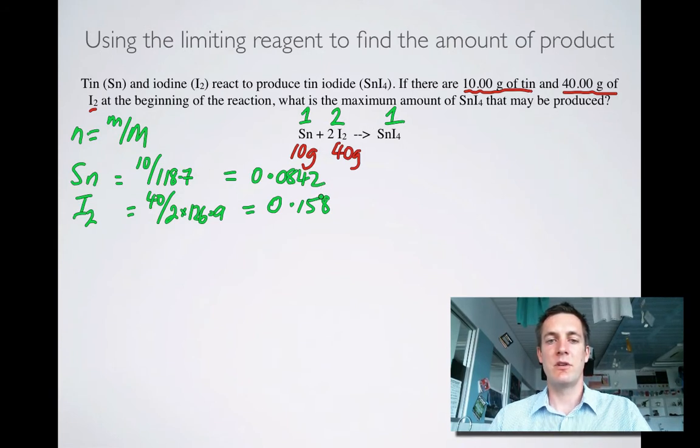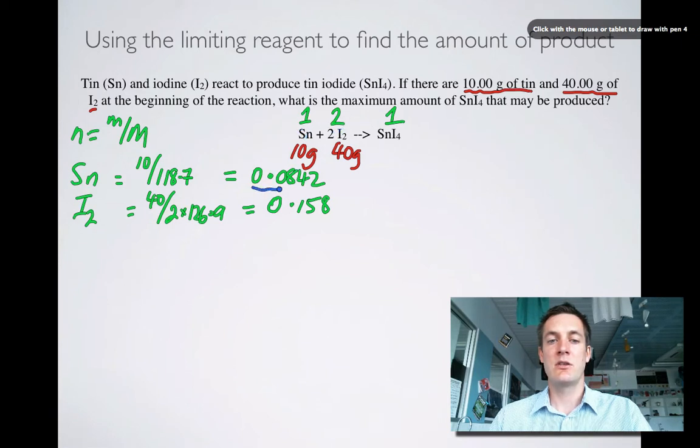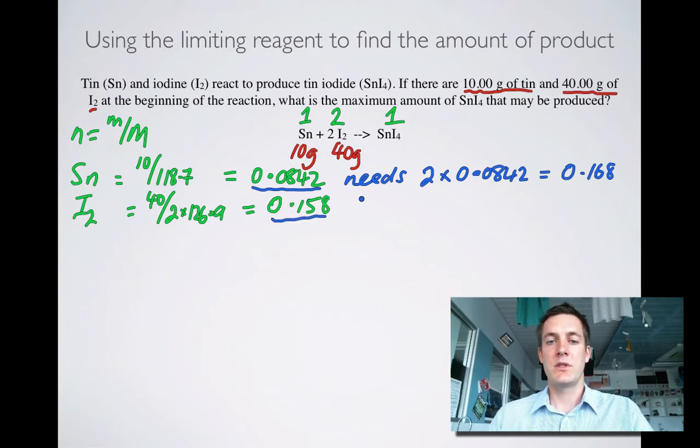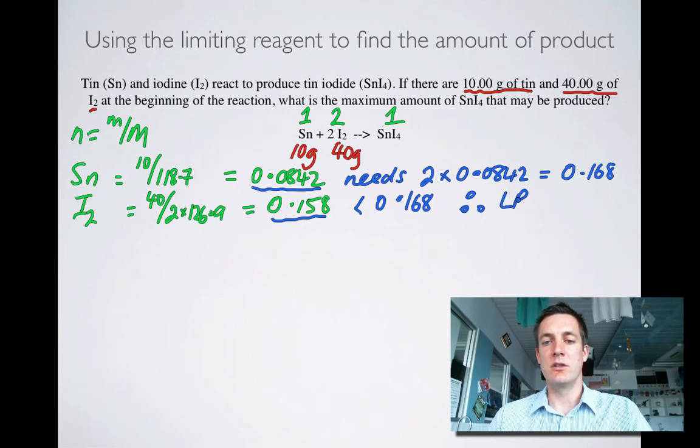Now, if you're going to be doing it the mental arithmetic way, you've still got to show some working to the examiner. So let's see what's going on here. The ratio is 1 to 2, so for every one mole of tin I need two iodines. So if I've got this much tin, this needs how much iodine to react with it, or twice that amount, so 2 times 0.0842, and that equals around about 0.168. Okay, but we've only got 0.158, so that's less than 0.168. So therefore, the iodine is the limiting reagent.